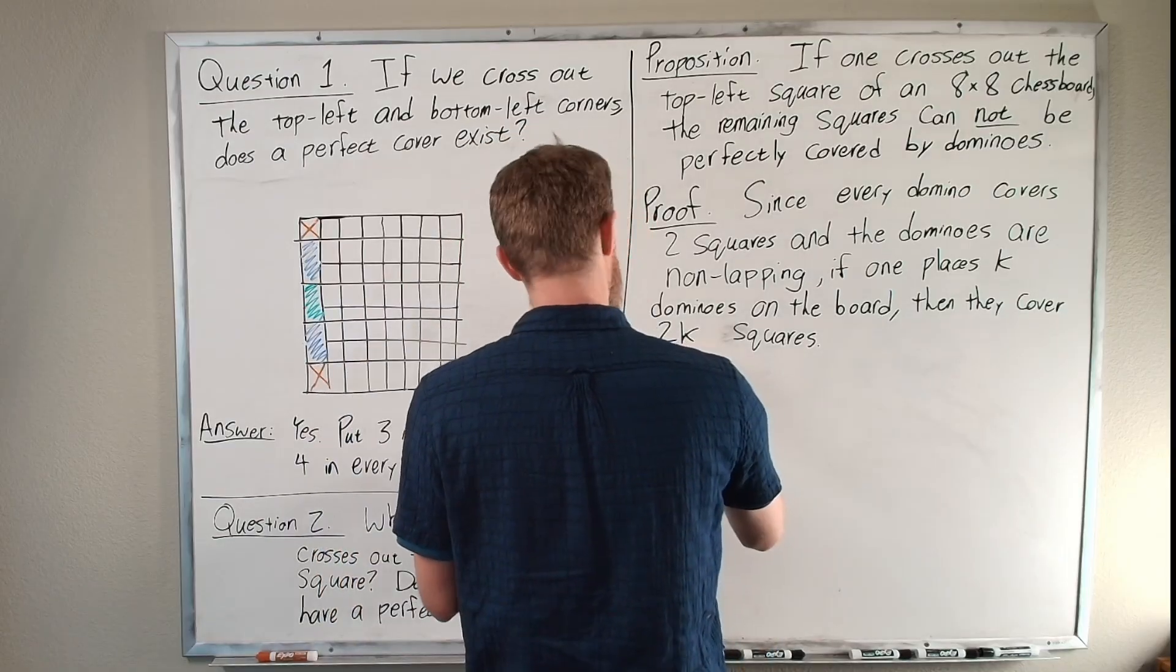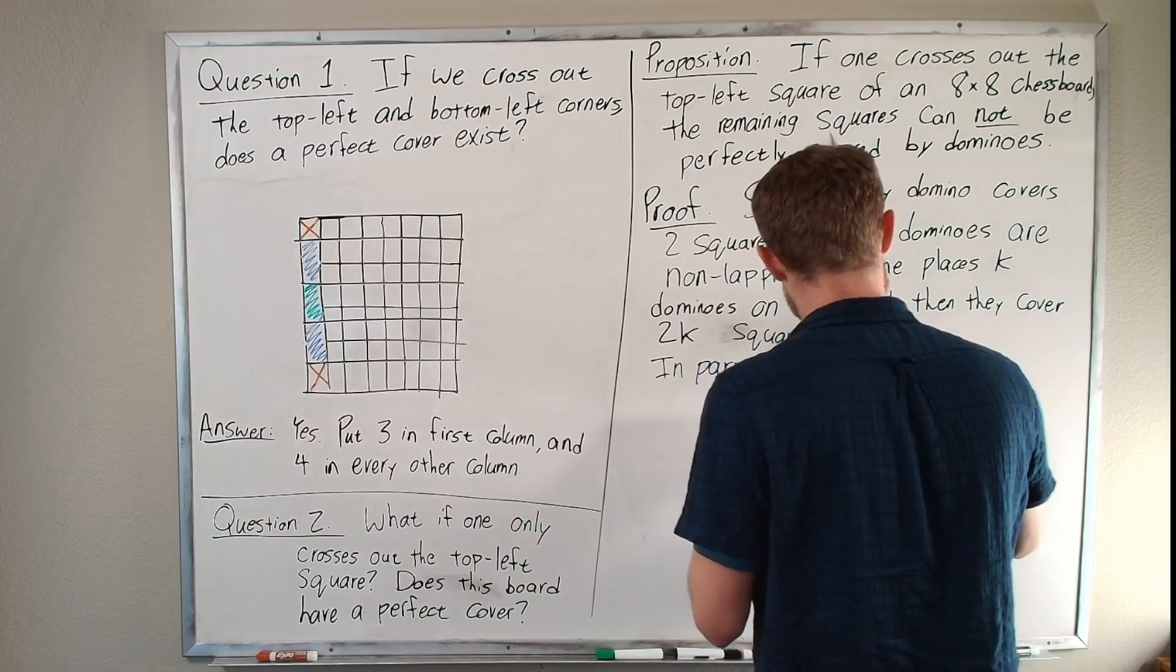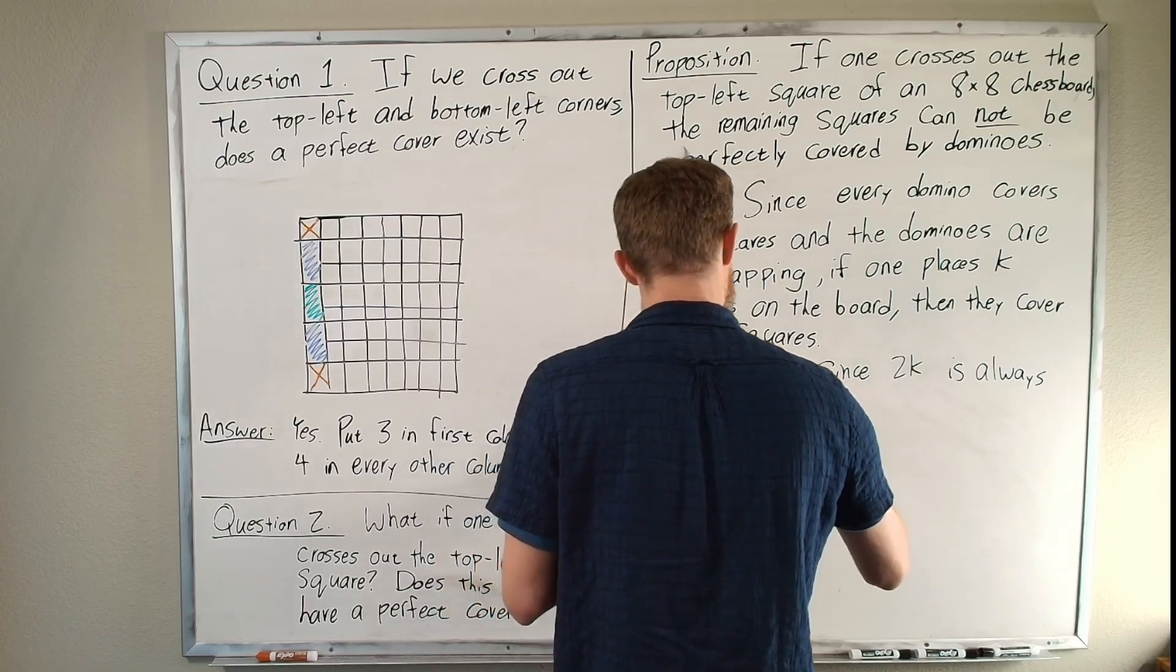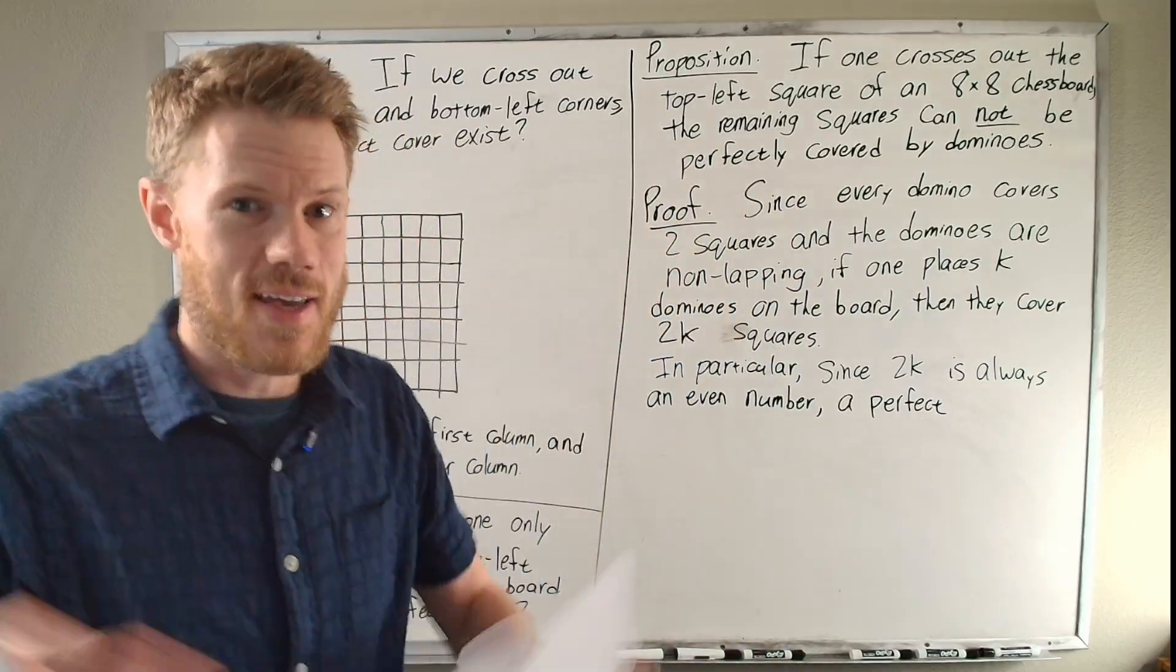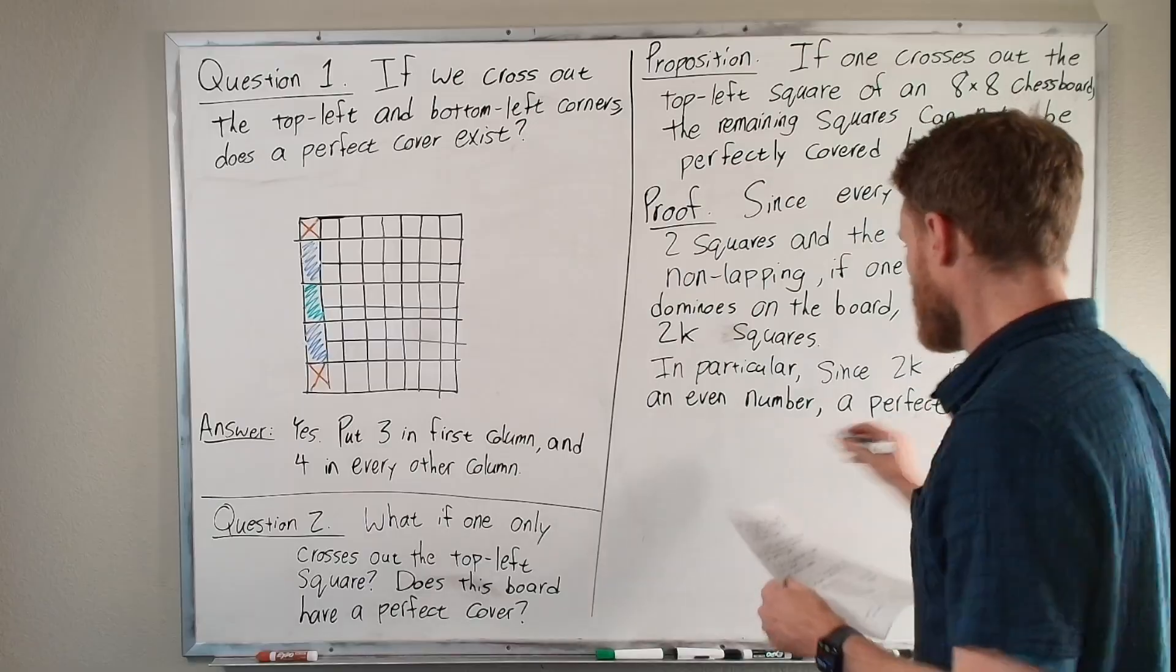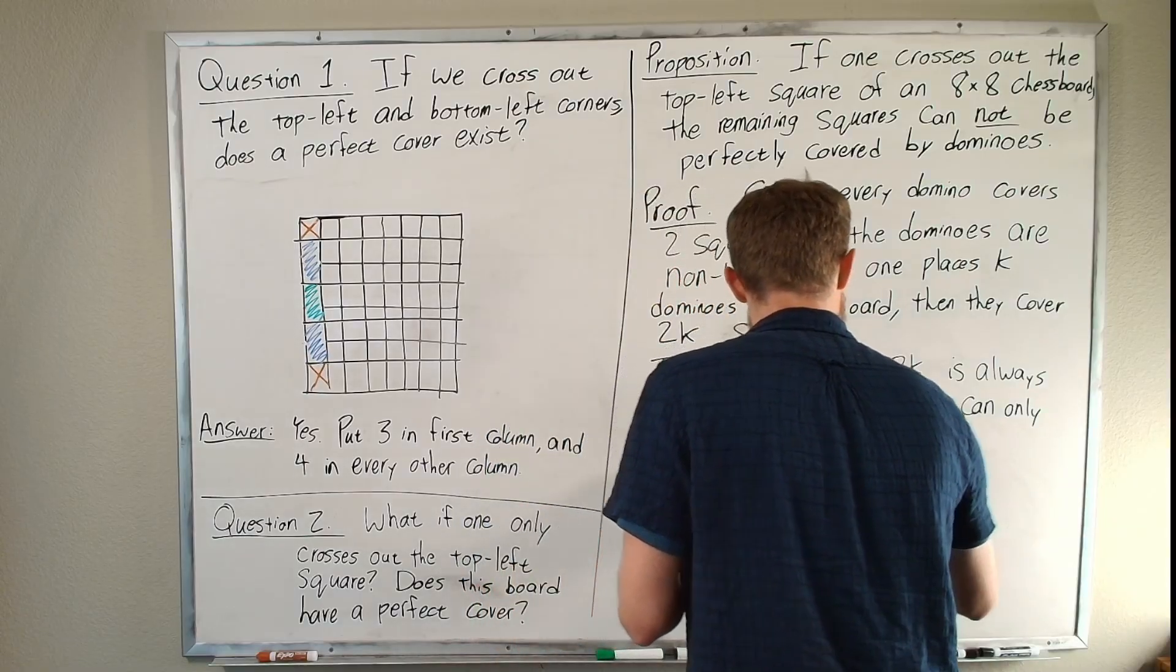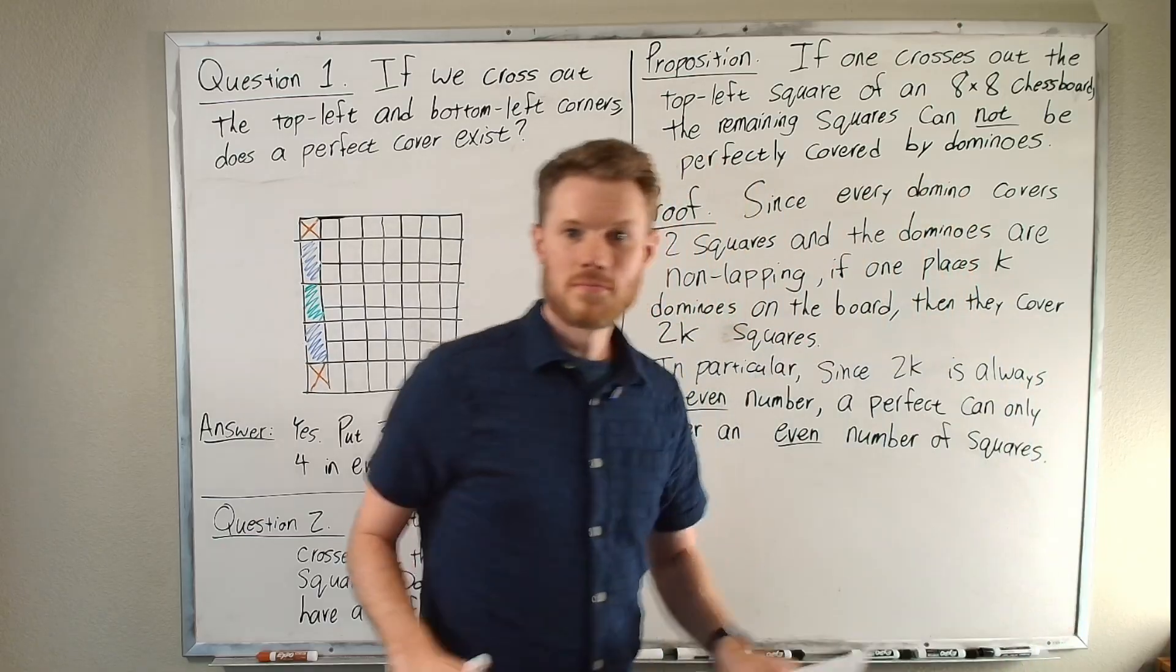I'll go with the second way in this solution, but you can come up with your own way. Many ways to express the same basic idea. So in particular, since 2 times k is always an even number, here, k is the number of dominoes, so it's an integer, right? k is not 2 and a half or pi or anything like that. k has to be an integer, which makes 2k guaranteed to be an even number. Since 2k is always an even number, a perfect covering can only cover an even number of squares. So that's an important note.